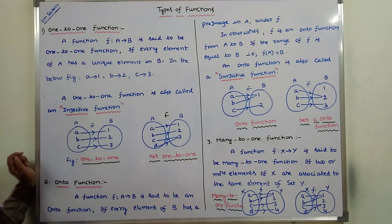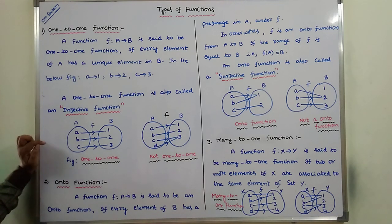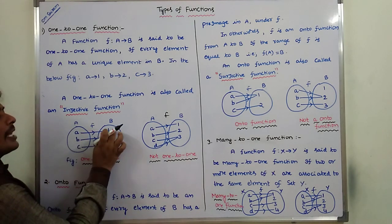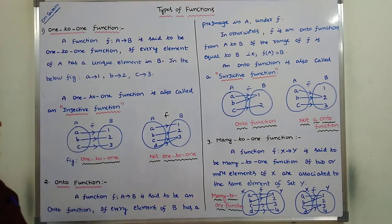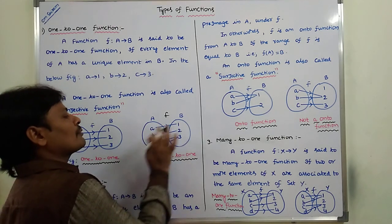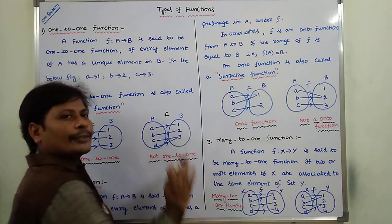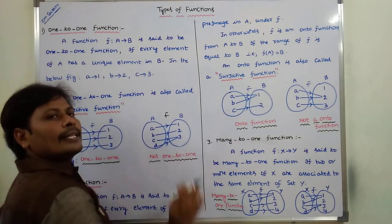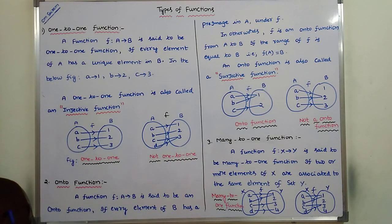In other words, for every element of set A, there is a unique image in set B. In the valid example, a's image is 1, b's image is 2, and c's image is 3. But in the counter-example, c's image is 3 and d's image is also 3. Hence we can say that it is not a one-to-one function.